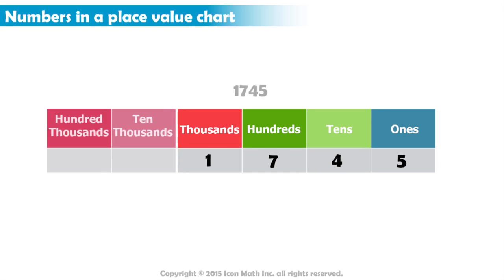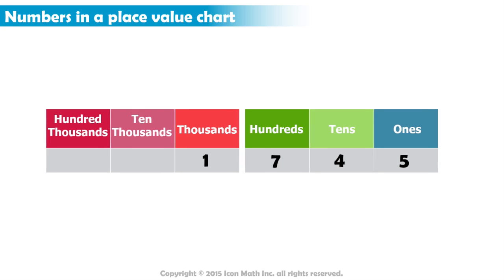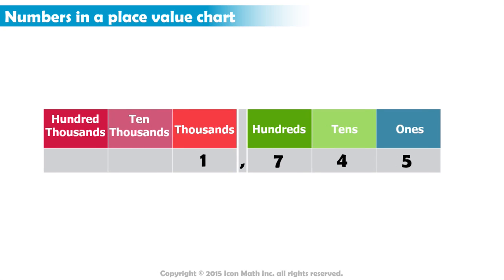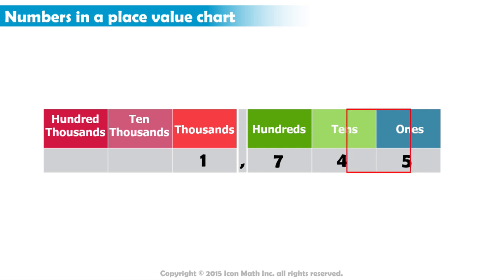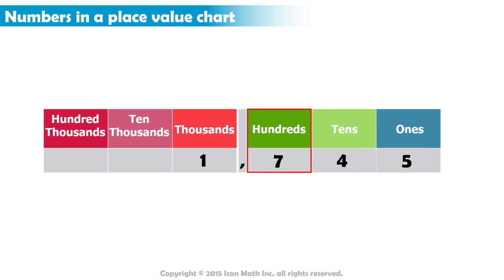When we write a long number, we use commas to separate groups of three digits from right to left to simplify reading and writing these numbers. The first three digits from the right — the ones place, the tens place, and the hundreds place — form the ones group.